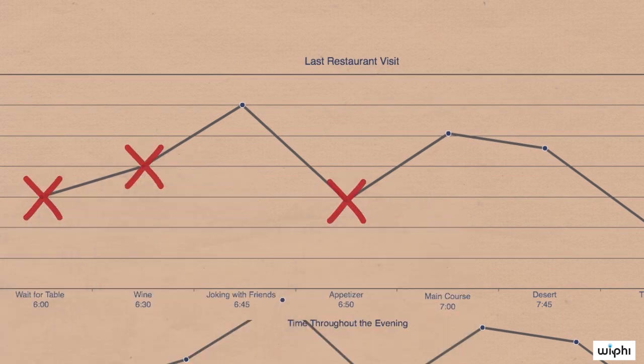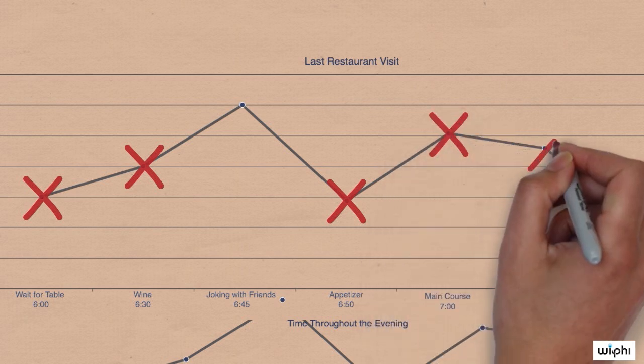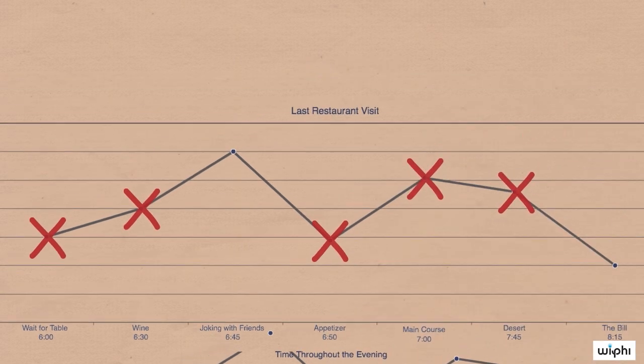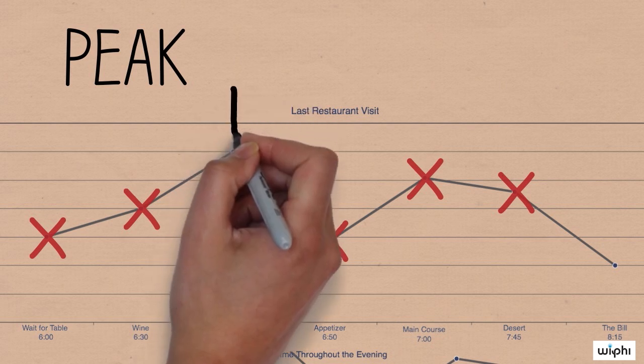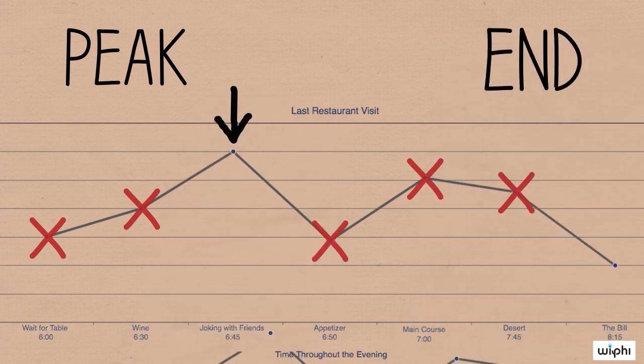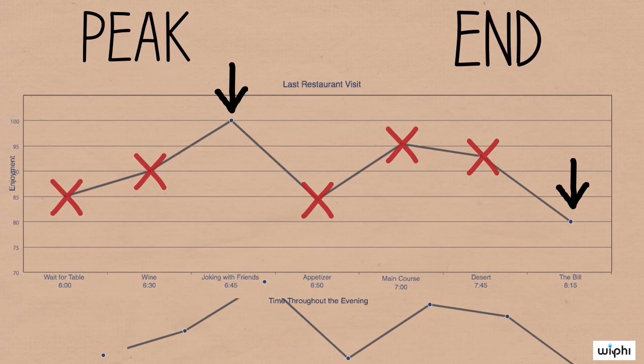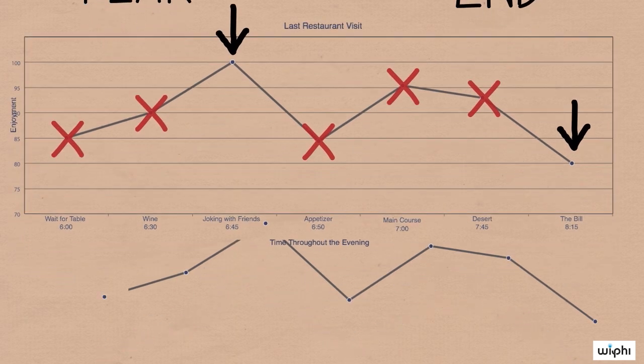The peak, that is, the part of the experience that's most extreme, either good or bad, and the end, that is, how it ended. All of our memories, both good ones and bad ones, are often remembered as such because of the action of these two points.